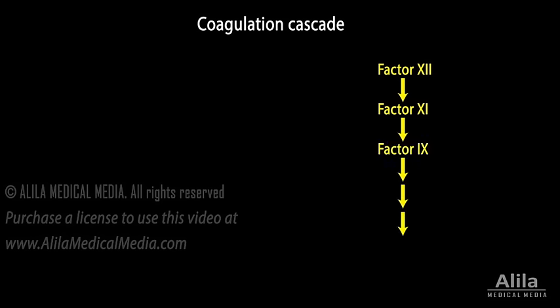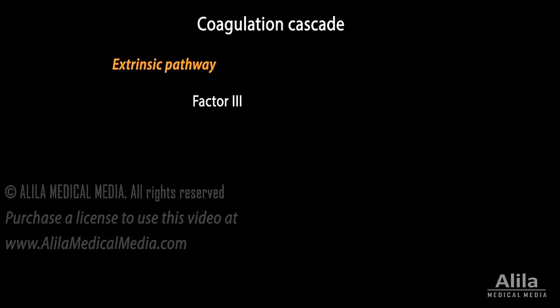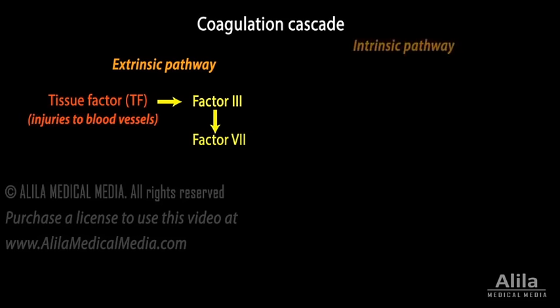Coagulation is a complex chain reaction where one clotting factor activates the next in a multi-step pathway. There are two activation pathways for coagulation. The extrinsic pathway starts with the exposure of blood clotting factors to the tissue factor, TF, in the extravascular tissue — this pathway is induced by injuries to blood vessels. The intrinsic pathway, which involves only factors within blood vessels, is thought to serve as a positive feedback loop, amplifying coagulation.